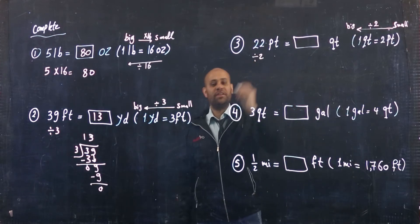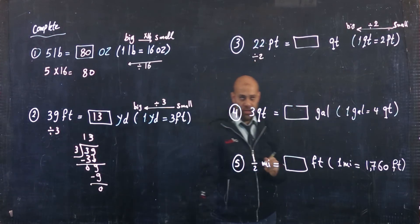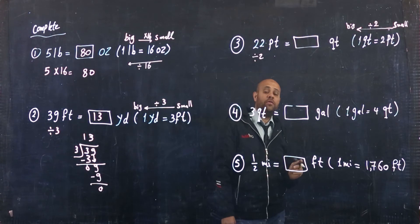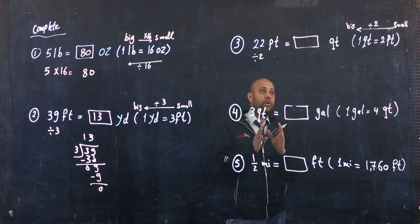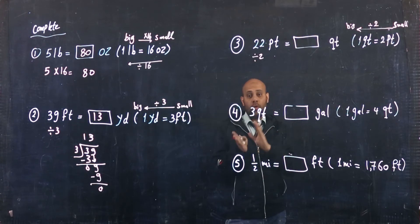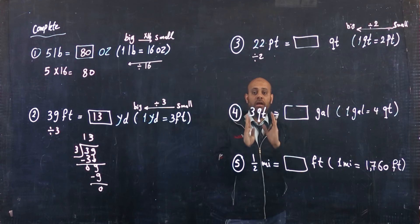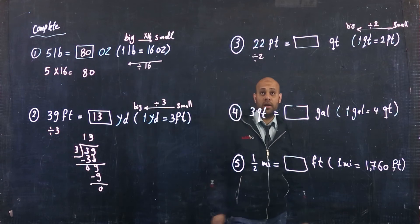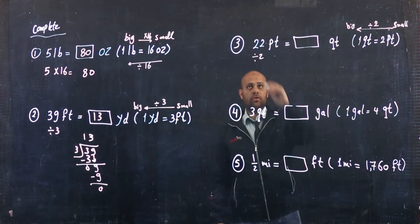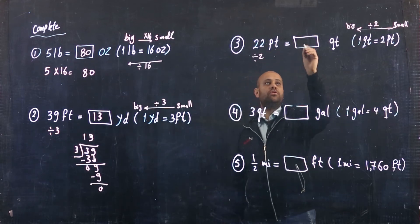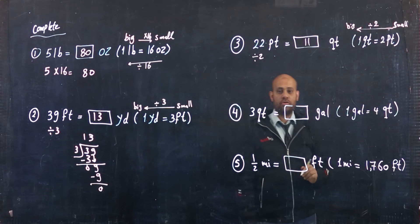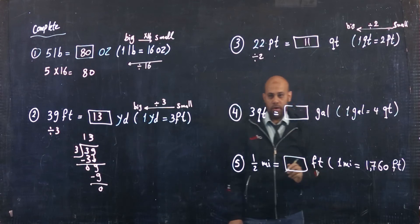It's a very easy question. If you determine whether to divide or multiply, that is the main idea, and you will know the correct answer. 22 divided by 2 equals 11. So easy.